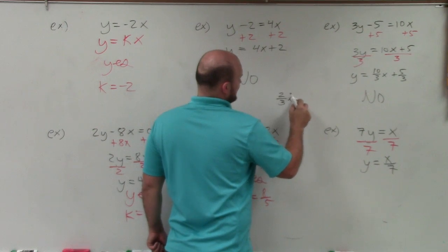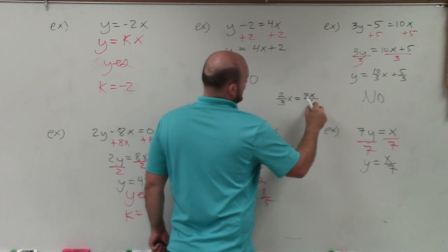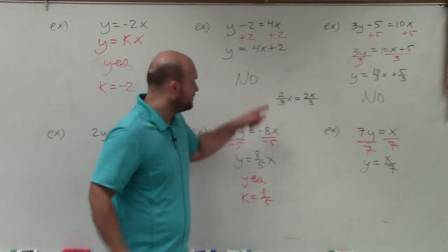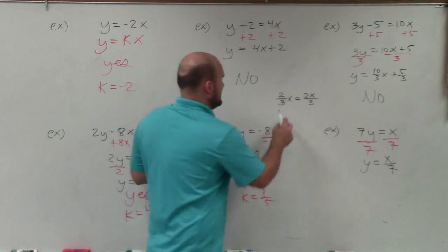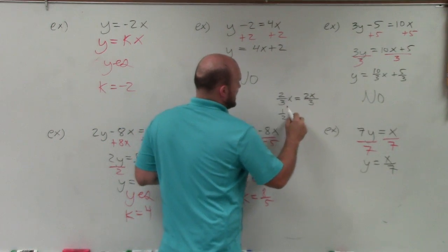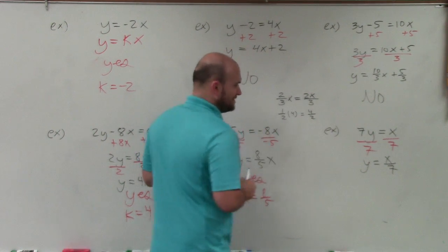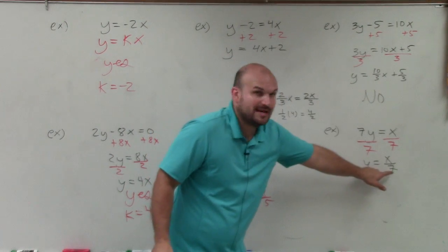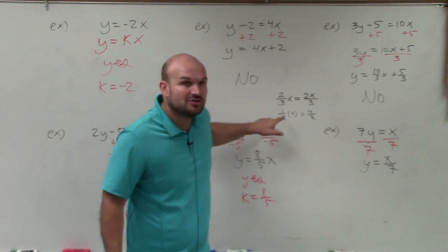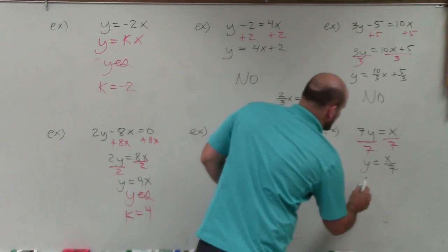that 2 thirds x is equal to 2x divided by 3. OK? Those are equivalent. Same thing. 1 half times 4 is the same thing as 4 divided by 2. So in reality, if I'm dividing by 7, that's the same thing as multiplying by 1 seventh.